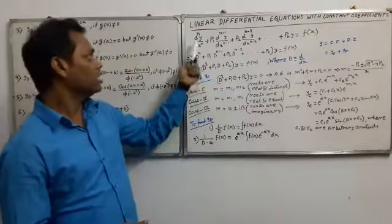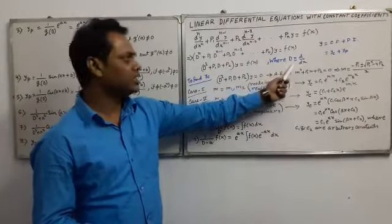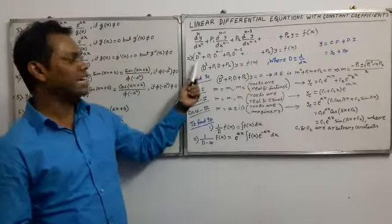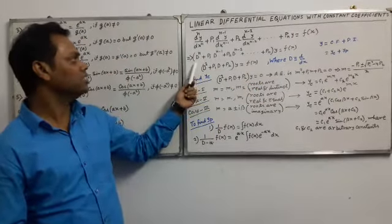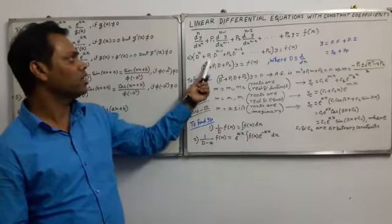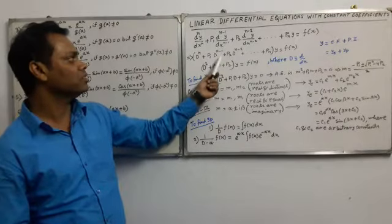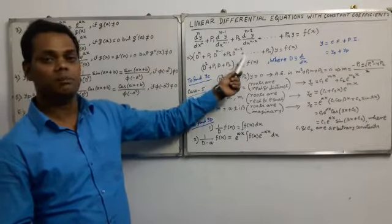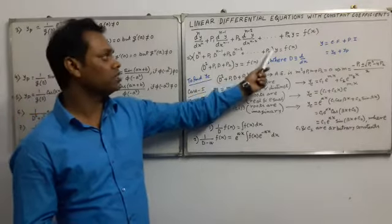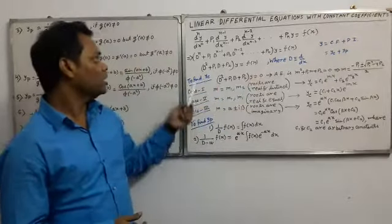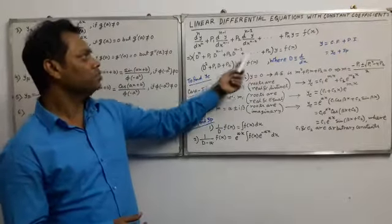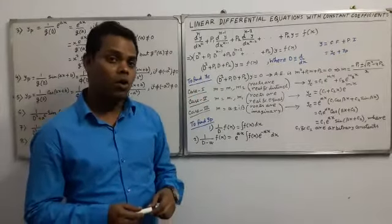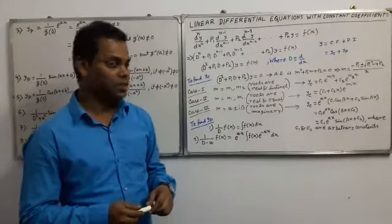Here, D means d/dx — D is an operator. So that equation can be written as: D^n + p1*D^(n-1) + p2*D^(n-2) + ... + pn, all times y, equals f(x). Here, p1, p2, ..., pn are all constant coefficients.